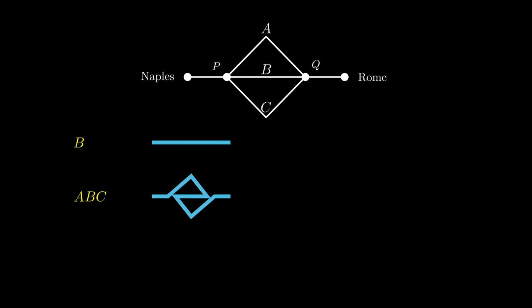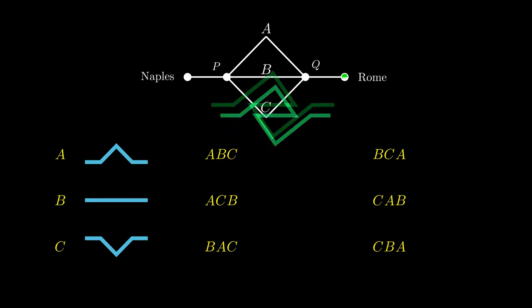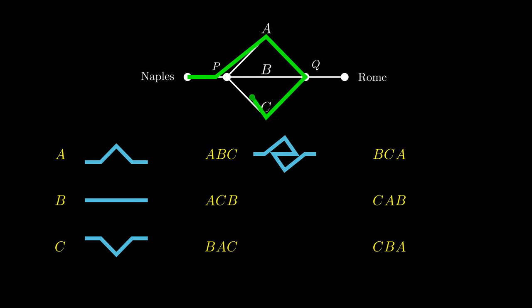Therefore, each path name must consist of either one road or three roads. All we need to do is list all of the permutations of the three roads and each of the single roads. We now have a pairing, or bijection, between our paths and our names, so there must be the same number of paths as names, giving us a final total of nine paths.